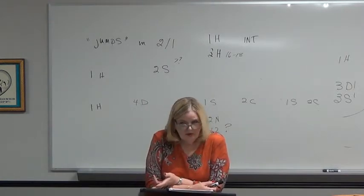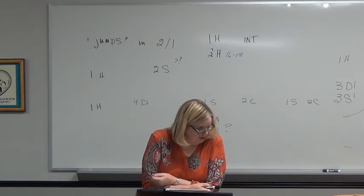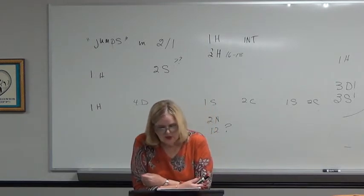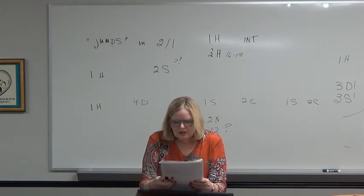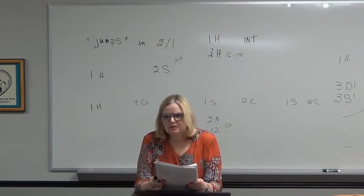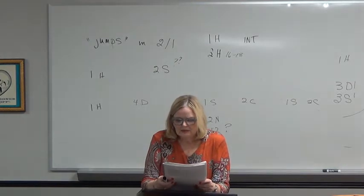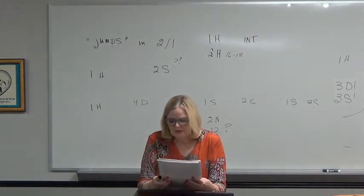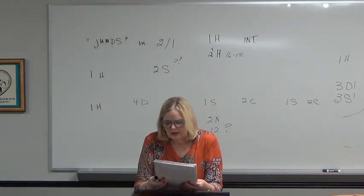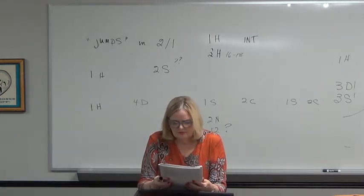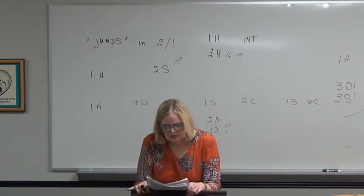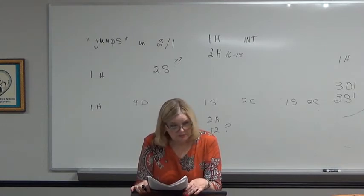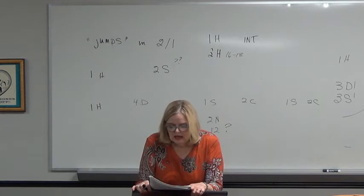What about hand B? Three spades. You need seven or ace king queen jack sixth for the jump. Hand C, you could jump to three spades to set the spade suit and go from there. And D what's your rebid? Two hearts. No brainer. Hand E, one spade two clubs, three clubs natural.